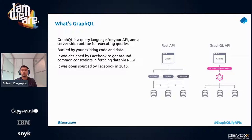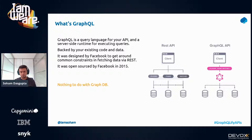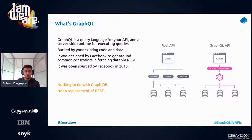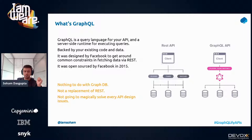Just a note of caution: this has nothing to do with your GraphDB. Although you can write GraphQL APIs on top of GraphDB, they are not tied to each other — you can write GraphQL APIs on top of any hierarchical data. It's also not a replacement for REST — REST has its own use cases and GraphQL has its own; they can live together. And it's also not going to magically solve your every API design issue. If your lower-level design issues are still there, introducing GraphQL on top won't solve anything.